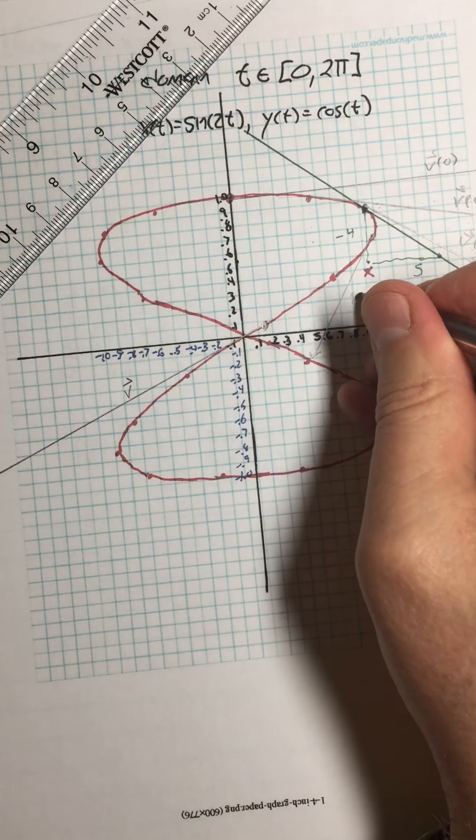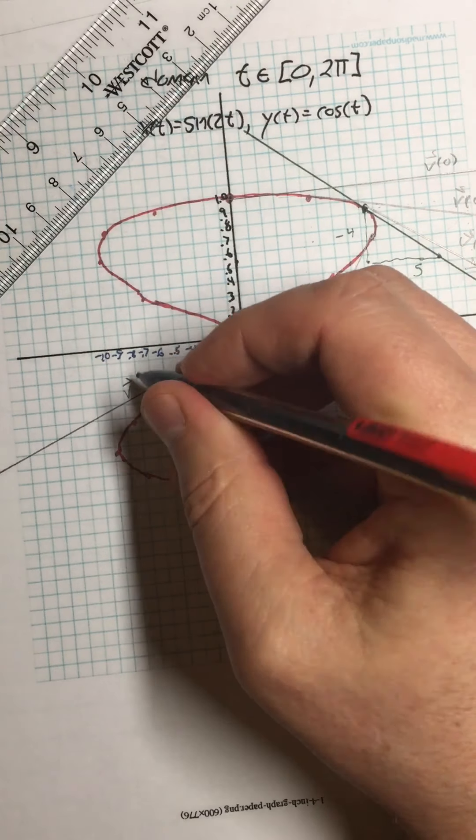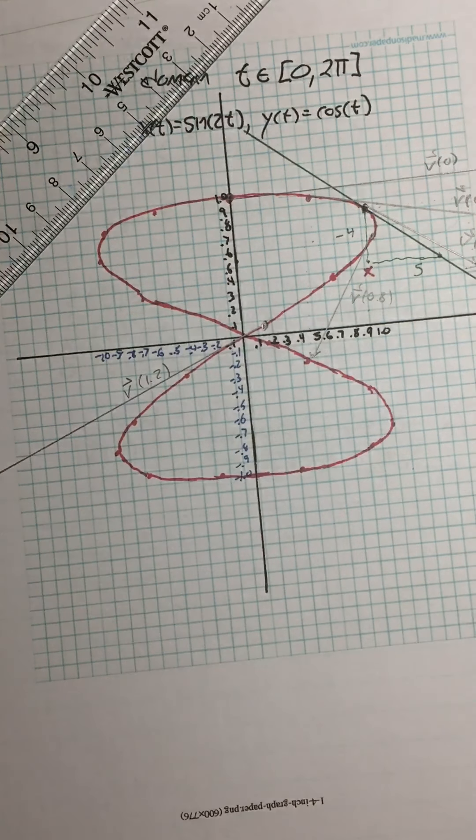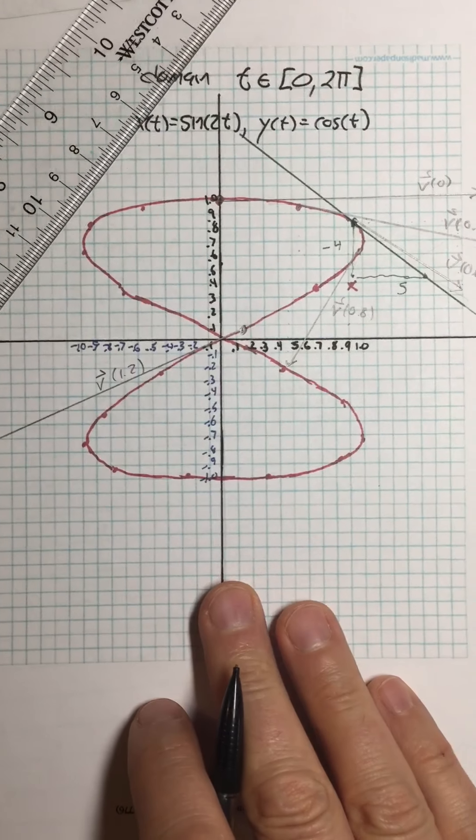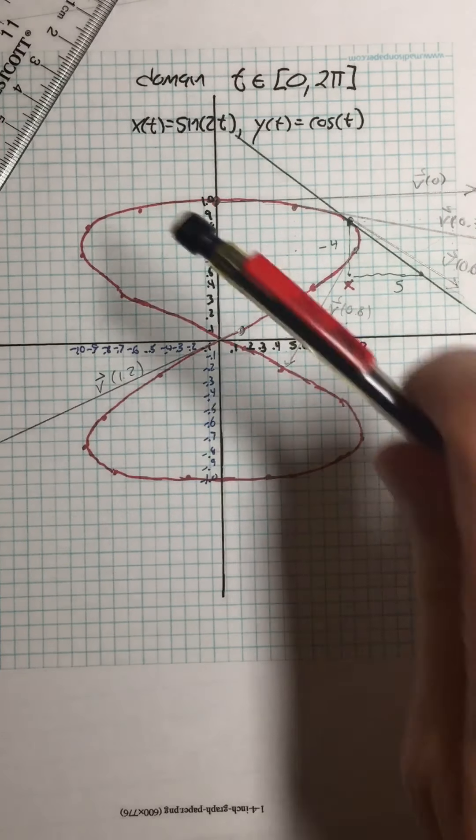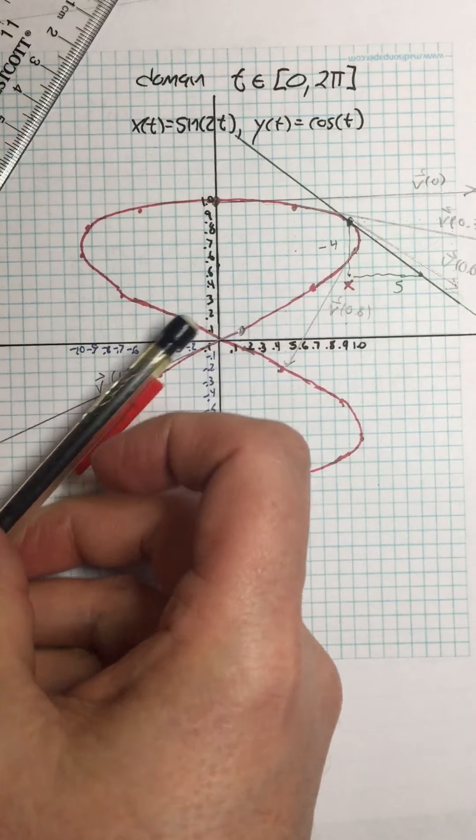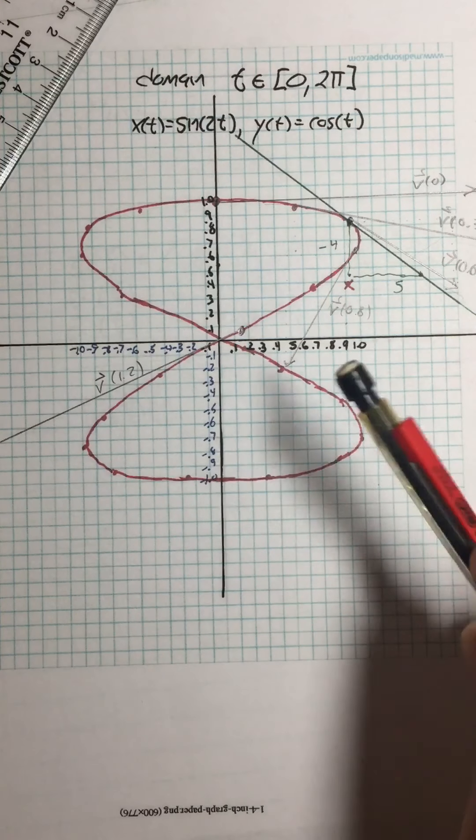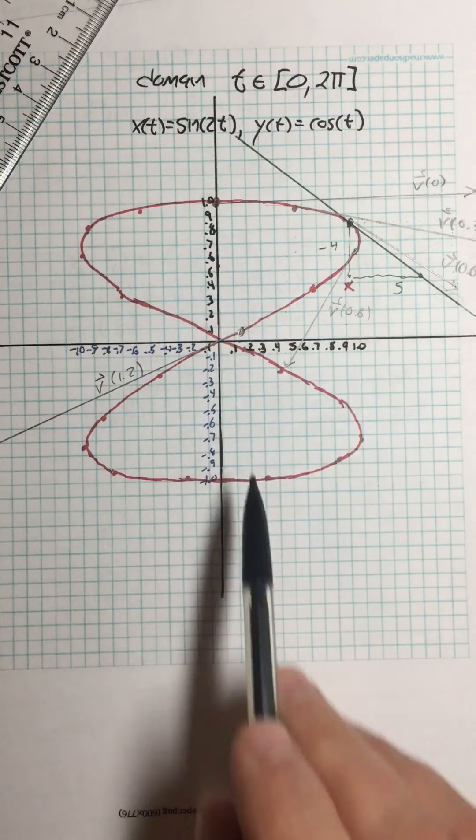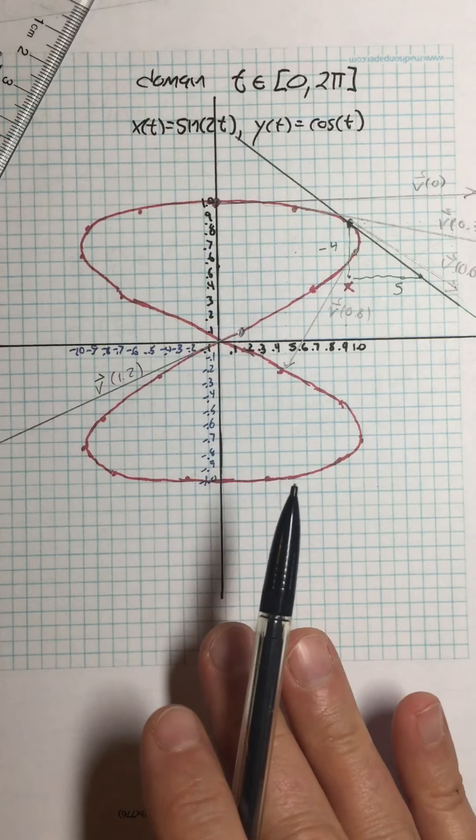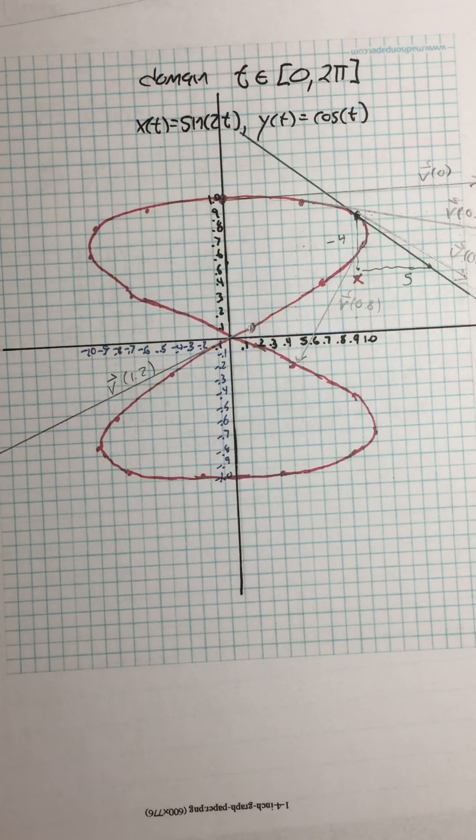So that's velocity at, let's see, this is 0.6. This is 0.8. So this must be 1.2 because I skipped one. Alright, so those are some, you know, sampling of the velocity vectors. And you can see that as I go around, the velocity vector is always going to be tangent to the curve, but it's going to get longer and shorter depending on what the speed is, how fast this object is going.